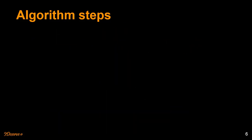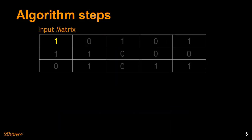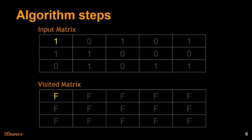Let's visualize the algorithm steps. This is the given input matrix, and we are going to maintain another matrix called a visited matrix. Each element in the visited matrix is either true or false — if we visit a node we mark it as true. We also maintain a cluster count, which is incremented whenever we encounter an element with value 1 that hasn't been visited.